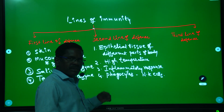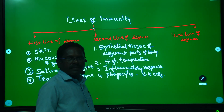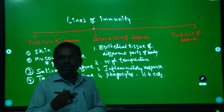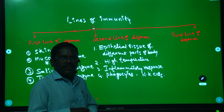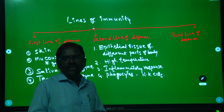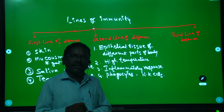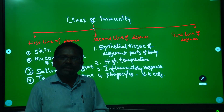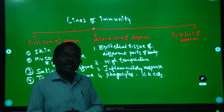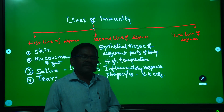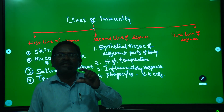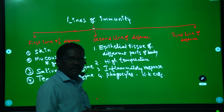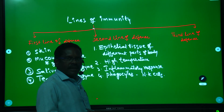High temperature of body also kills the germs. Inflammatory response — wherever inflammation or swelling takes place, if any wound occurs and tissue is damaged, mast cells respond to infection. At the time of infection, mast cells produce histamine and bradykinin, which are vasodilators. This causes blood vessels to swell, and inflammatory response also protects our body from microbes.